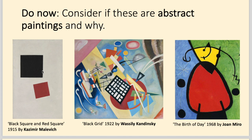This one is painted by Kazimir Malevich, this one by Wassily Kandinsky, and this one by Jean Miro — all three very famous abstract painters. Basically, abstract art is pure form: pure line, form and colour without anything figurative in it.